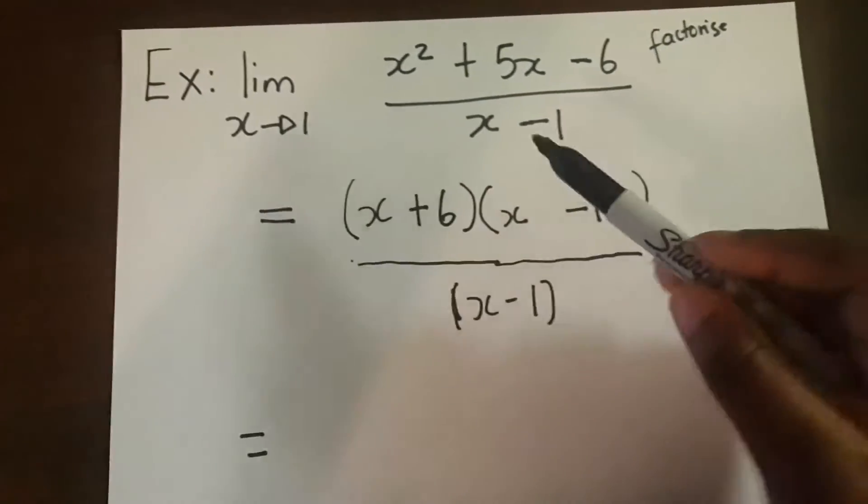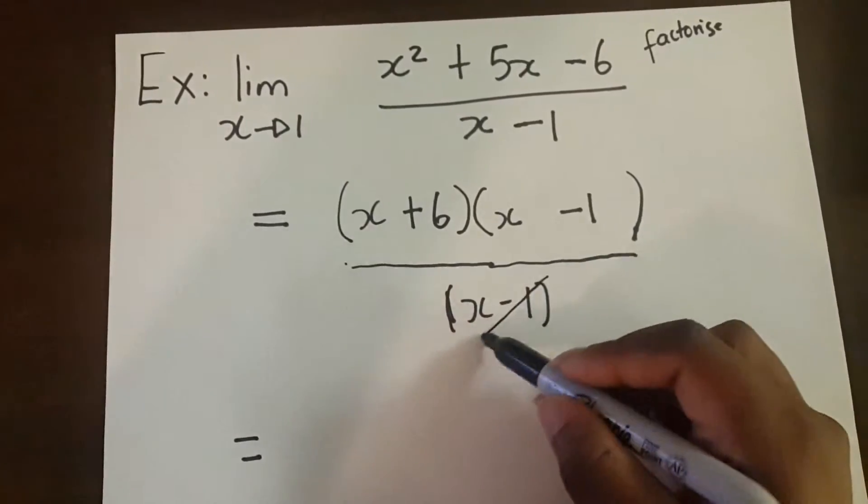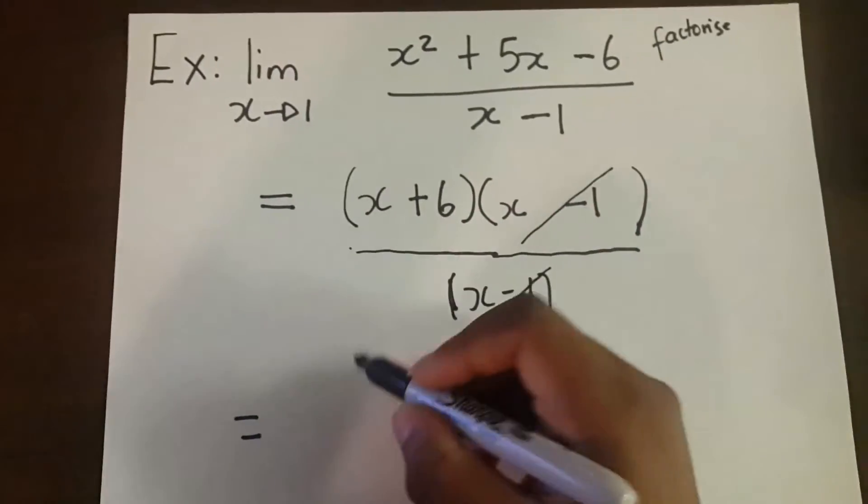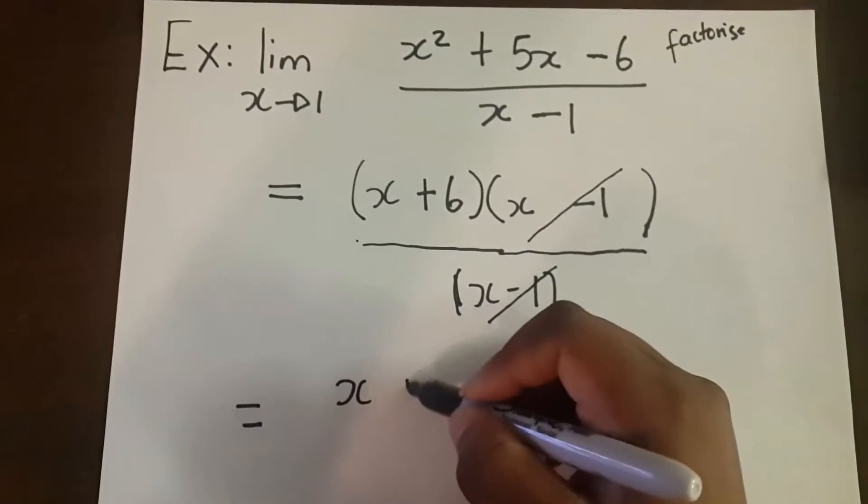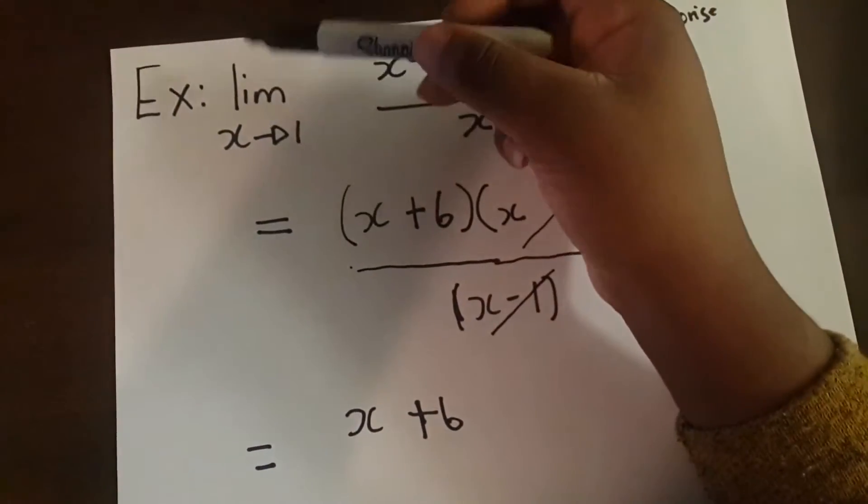So when you look at the top, the numerator and the denominator, you notice that x minus 1 is common. So you cancel that one out and then you're left with x plus 6.